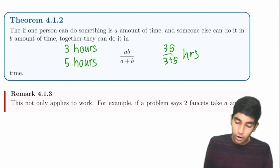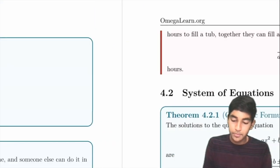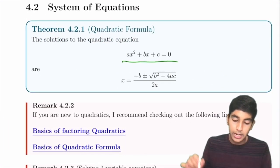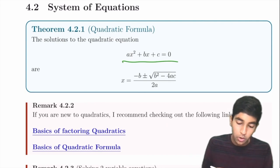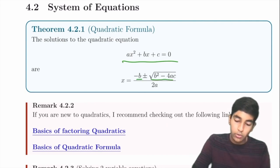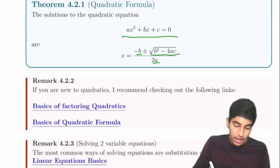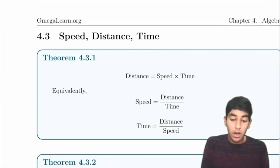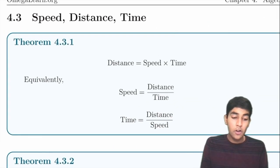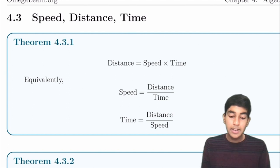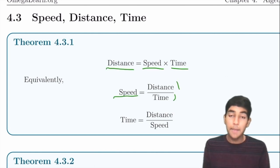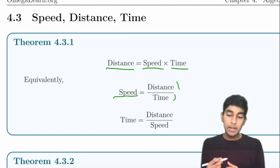Systems of equations: the quadratic formula gives x = (−B ± √(B²−4AC)) / (2A). For speed-distance-time problems: distance = speed × time, speed = distance / time, time = distance / speed. These problems usually require setting up variables and solving a system of equations.